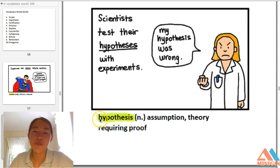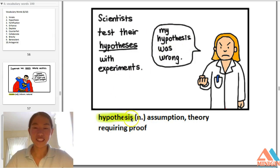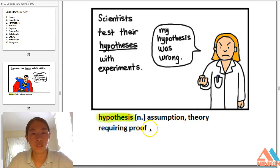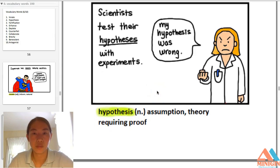Hypothesis — noun — an assumption or theory requiring proof. Scientists test their hypothesis with experiments. My hypothesis was wrong. Hypothesis: an assumption or theory requiring proof. It's what scientists need to answer in order to prove their experiments. Hypothesis — very important word.